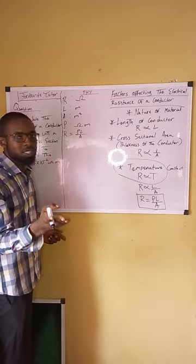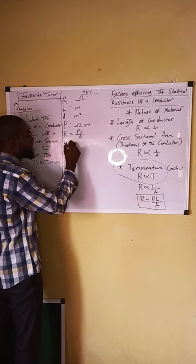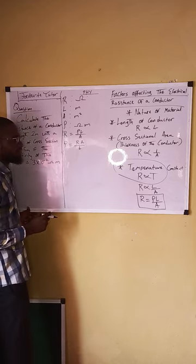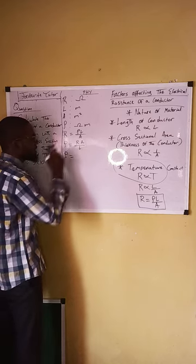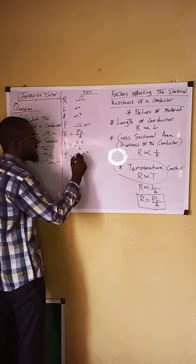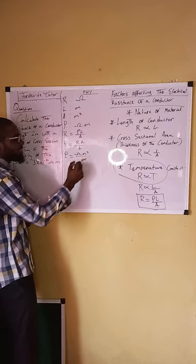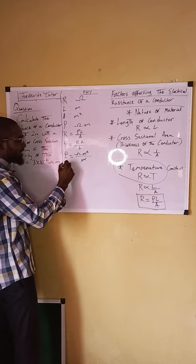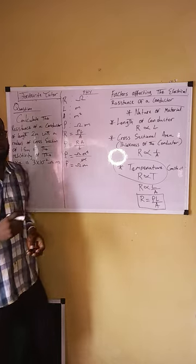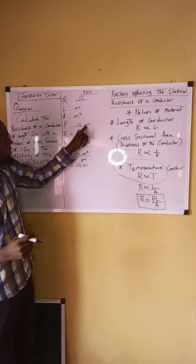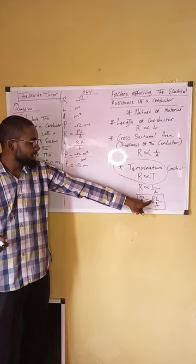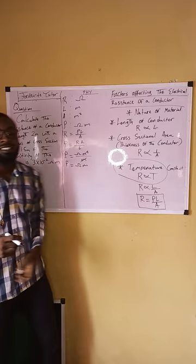If we make resistivity the subject of the formula, resistivity equals resistance times area over length. So the unit for resistivity equals ohms times meters squared divided by meters — the meters cancel out — giving us ohm-meters. That is how we derive the unit for resistivity from the required equation.